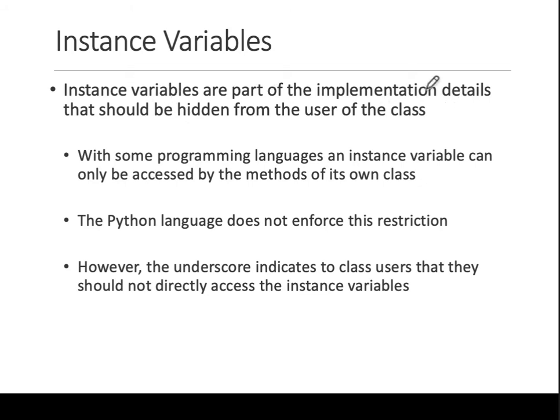Instance variables are part of implementation details and should be hidden — that's encapsulation, which we already talked about. Some programming languages differentiate between what's private and public to a class. In Python, it does not enforce this. In C++ or C#, public and private are strictly different. In Python, you can still access private things, but it's highly discouraged and you should not do it. When we see those examples, it will become more clear.